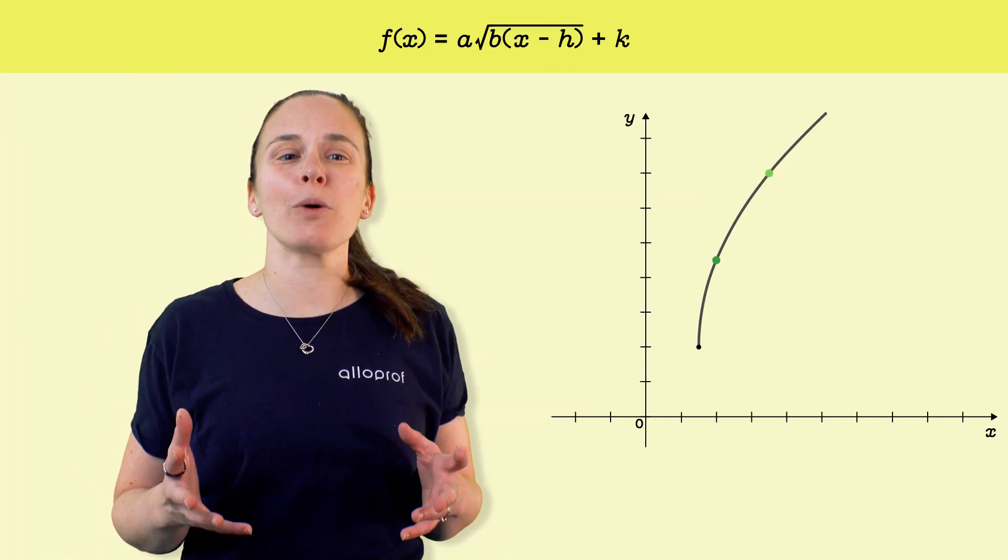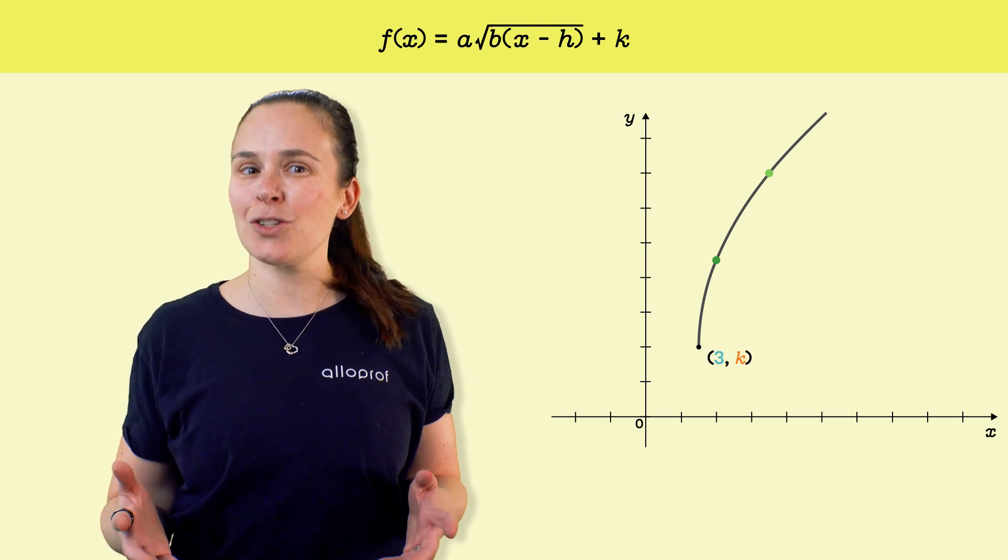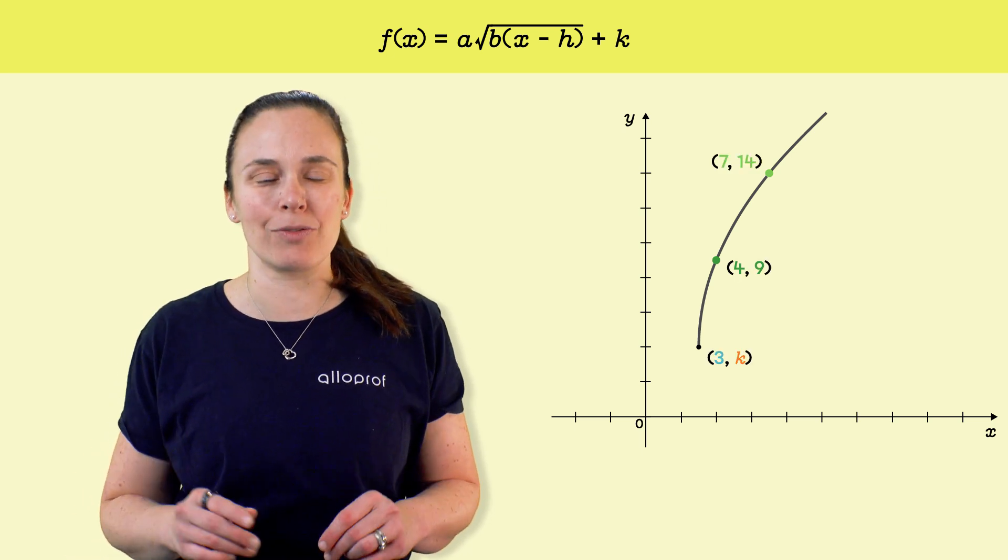We need to find the rule of a square root function that has its vertex at point 3,k and that passes through the points 4,9 and 7,14.